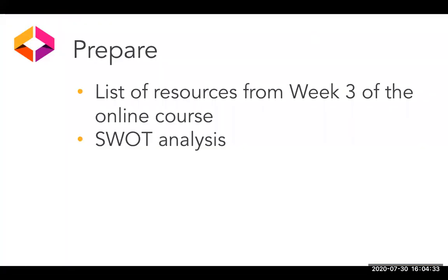The first thing I recommend you do is go back to module three of the online course. You'll recall that you had an activity in which you already developed an inventory of resources — both that you already have and that you may need in order to work with various audiences. You may also want to take a quick look at your SWOT analysis and check if you've listed any resources there, either under strengths for resources you already have, or weaknesses for resources you are lacking.